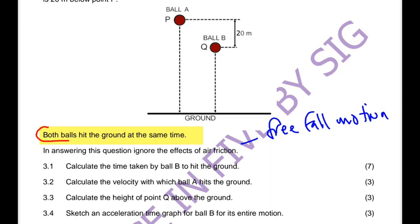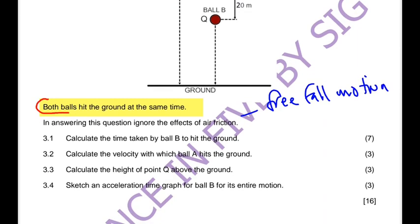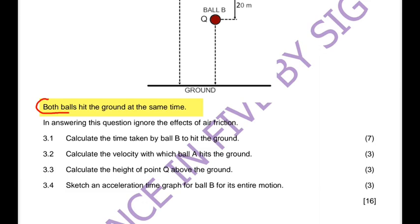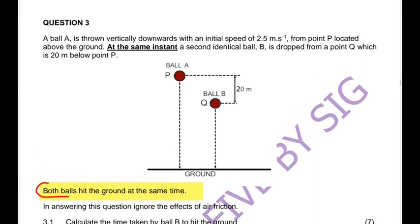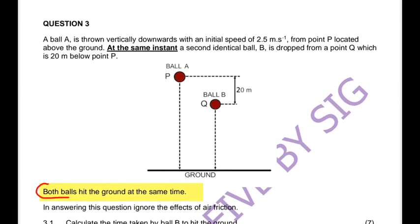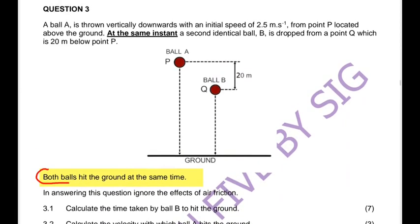Remember, free fall motion is when the only force acting on the object is the force of gravity or the weight. The sub-questions ask us to: calculate the time taken by ball B to hit the ground (7 marks), calculate the velocity with which ball A hits the ground, calculate the height of point Q above the ground, and sketch an acceleration-time graph for ball B for its entire motion.